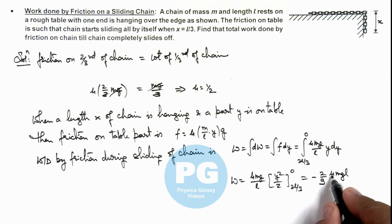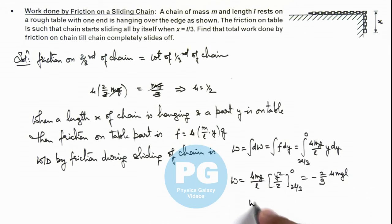And if we substitute the value of μ as 1/2, the work done finally we are getting is minus 1/9 mgl. That is the final result of this problem.